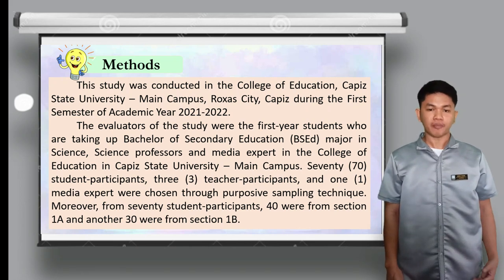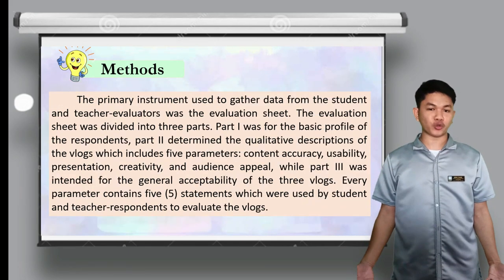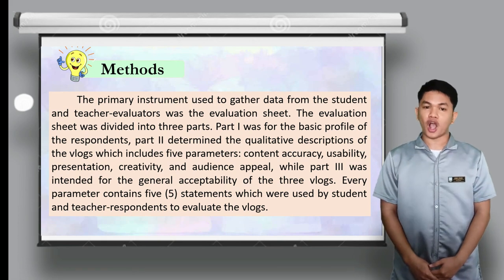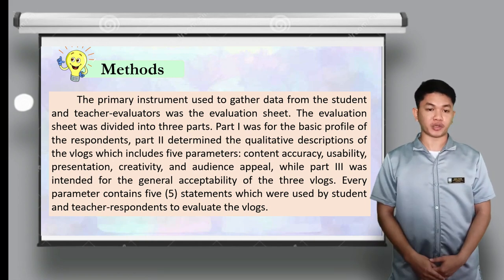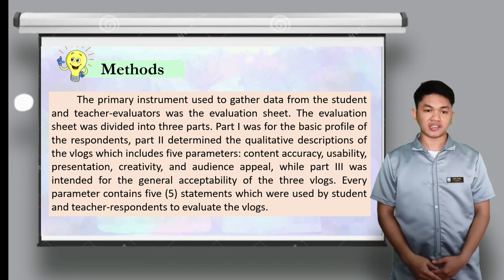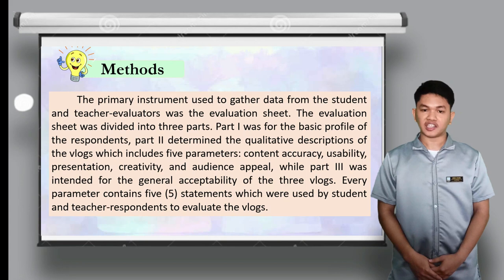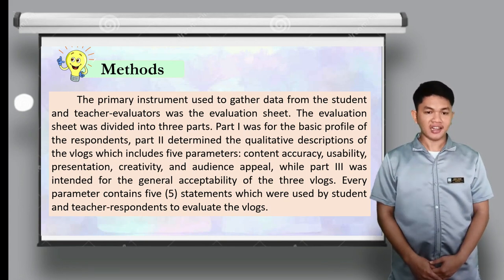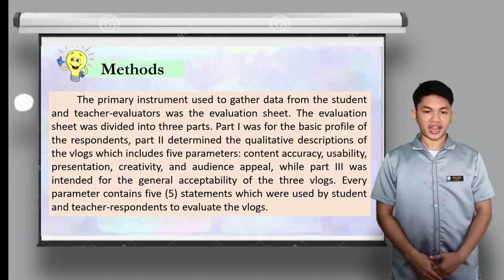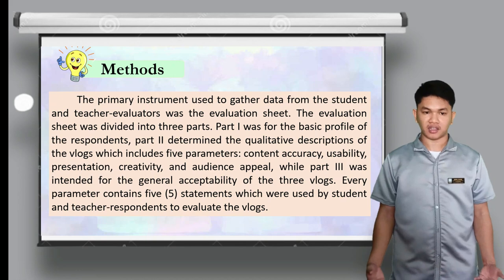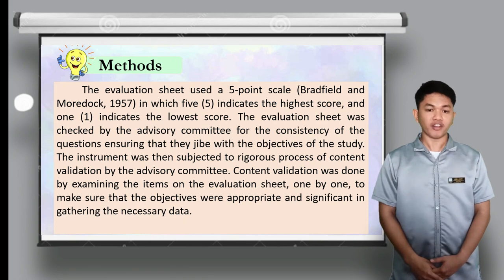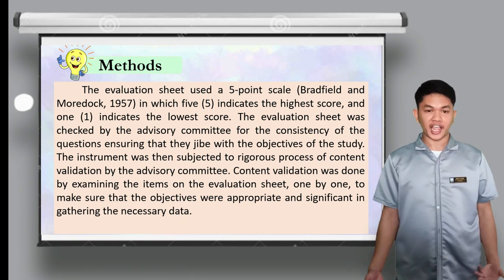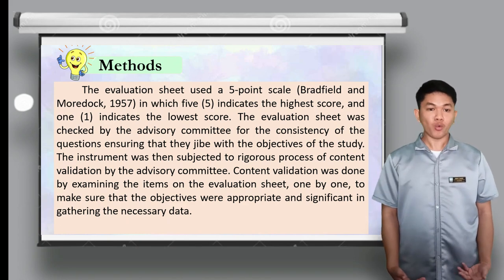Moreover, from 70 student participants, 40 were from Section 1A and another 30 were from Section 1B. The primary instrument used to gather data was the evaluation sheet, divided into three parts. Part 1 was for the basic profile of respondents. Part 2 determined the qualitative descriptions of the vlogs across five parameters: content accuracy, usability, presentation, creativity, and audience appeal. Part 3 was intended for the general acceptability of the three vlogs.